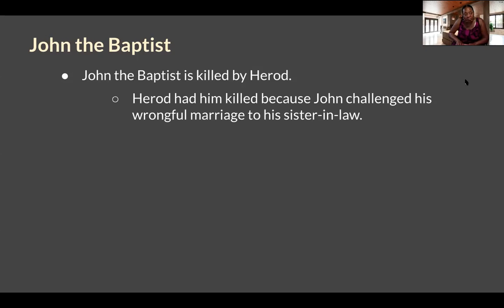John the Baptist said, 'You can't just take your brother's wife and make her your wife — that's not right.' At that time, Herod wanted to have John killed, but if you look at verse five, we find out why he didn't: he feared the people, because they considered John the Baptist to be a prophet. Since he didn't want to stir up trouble with the people, he refrained from killing John at that point.